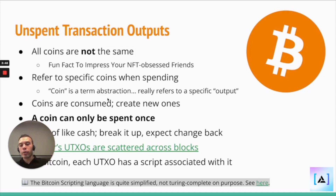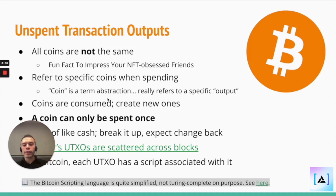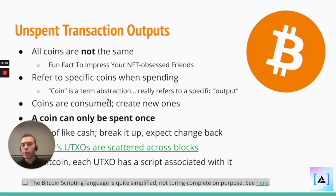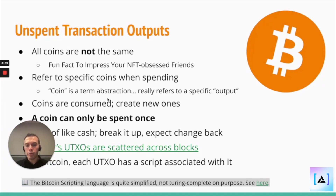So all Bitcoins are actually UTXOs. The way this works is — remember when I said you deposited two dimes worth 20 cents, and the bank doesn't keep track of those specific deposits — Bitcoin in a way does.